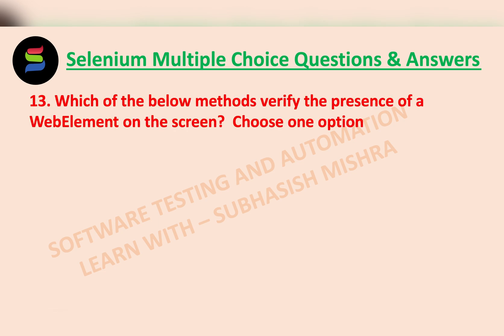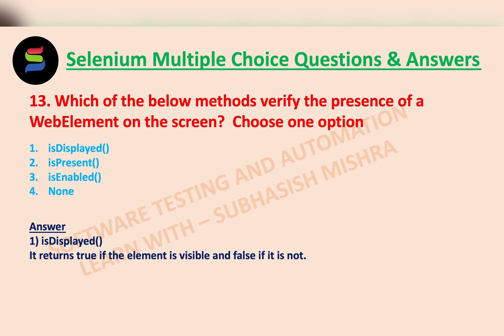Which of the below methods verifies the presence of a web element on the screen? You have to choose one option: isDisplayed, isPresent, isEnabled, or None. The answer is isDisplayed — it returns true if the element is visible and returns false if it is not visible.